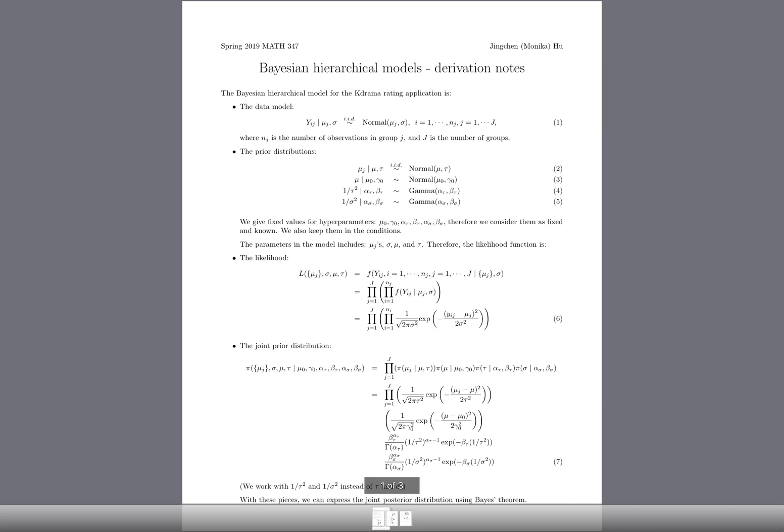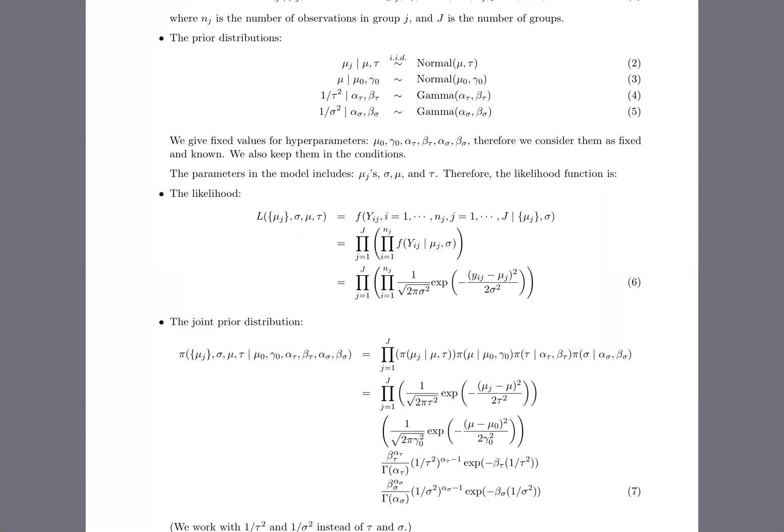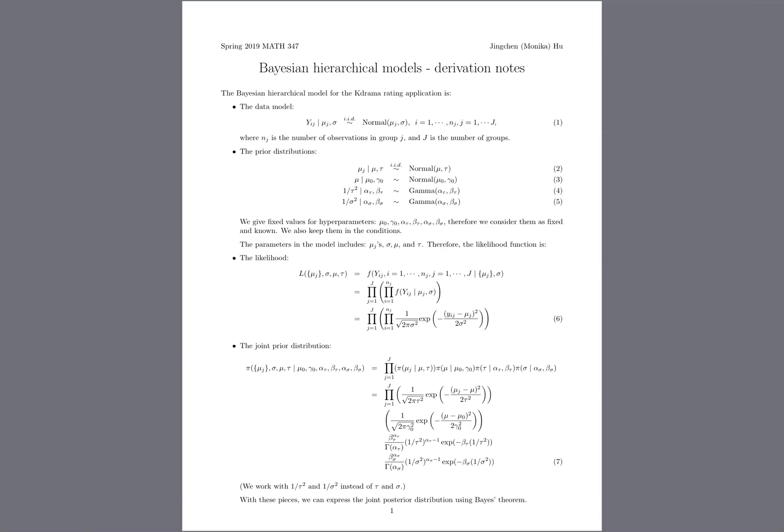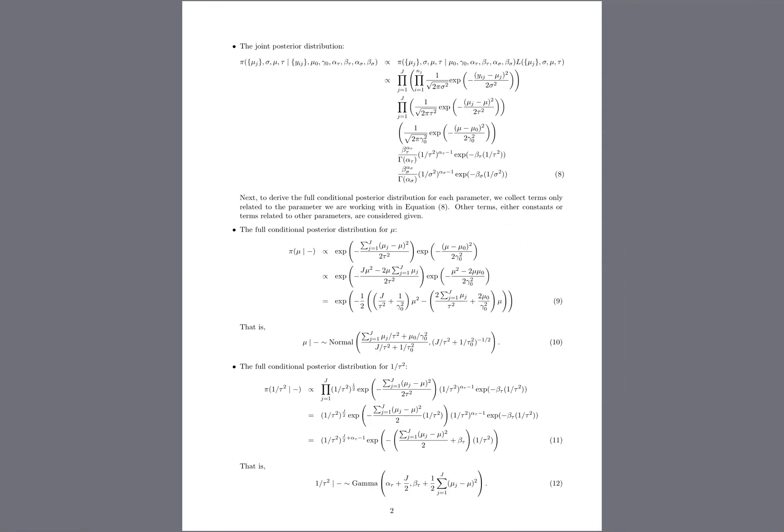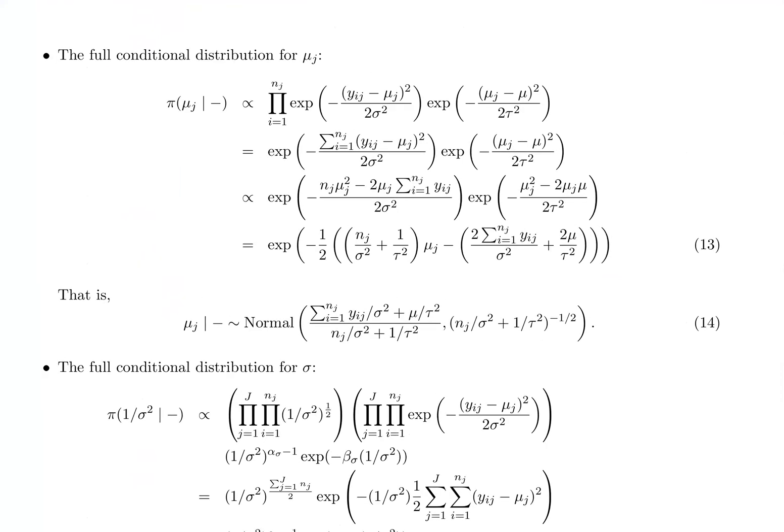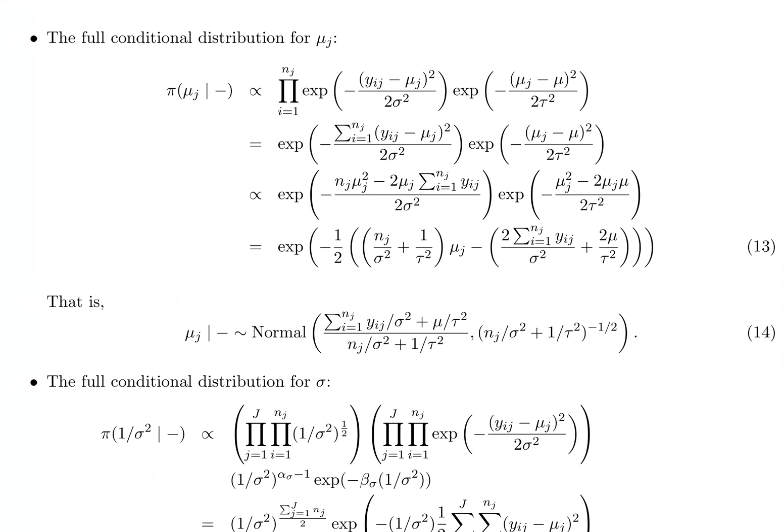Because mu and tau don't appear in the likelihood, they only have their own priors and contribute to the priors of mu_j. Those are the only places they appear, so deriving the full conditional posterior distribution for them is less complicated because you have fewer terms to work with.